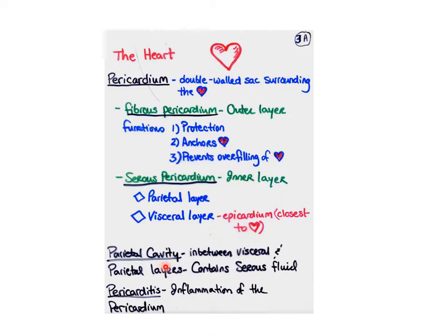The pericardial cavity is in between the visceral and parietal layers, and that's where your fluid is. An inflammation of the pericardium — sometimes a secondary infection secondary to pneumonia, because the lungs are close by and infections can be transferred from the lungs into the heart — is called pericarditis.